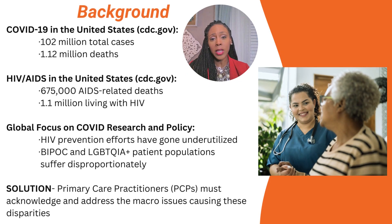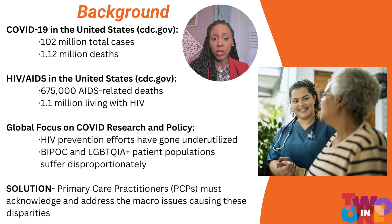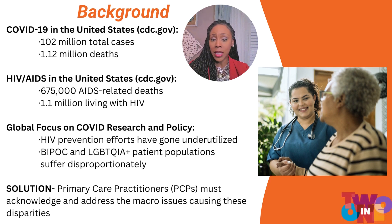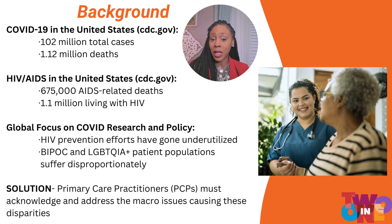To date, the U.S. has experienced 102 million reported cases of COVID-19 and a little more than 1 million deaths from this global pandemic. More than half a million Americans have died of AIDS and 1.1 million people are currently living with HIV in the United States.